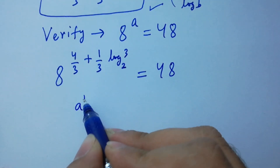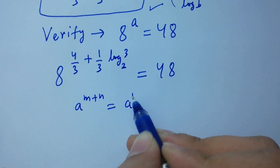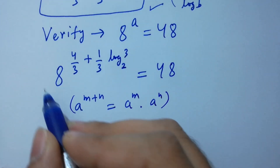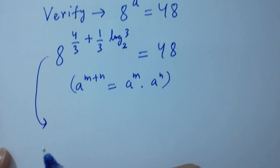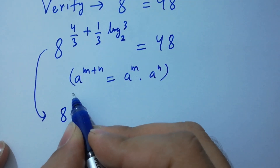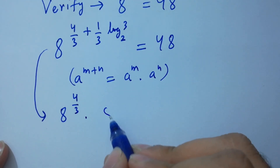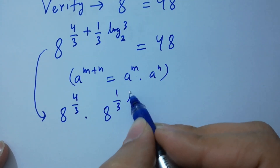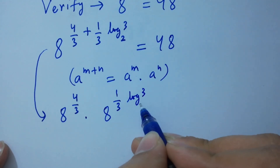As a to the power (m plus n) equals a to the power m times a to the power n, we have 8 to the power 4 over 3 times 8 to the power (1 over 3 times log 3 to the base 2).